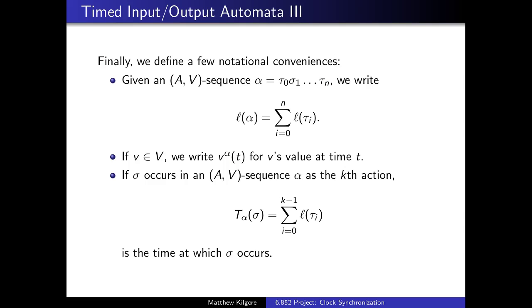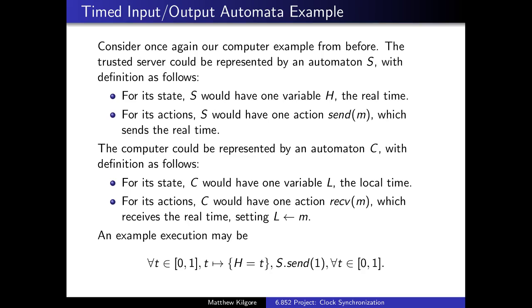Finally, we're going to define a few notational conveniences. Given AV sequence alpha, we write alpha dot tau times. For V in V, we write V(alpha, t) for V's value at time t. If sigma occurs in an AV sequence substring, then we write t(alpha, sigma) for the sum, which is the time that sigma occurs.